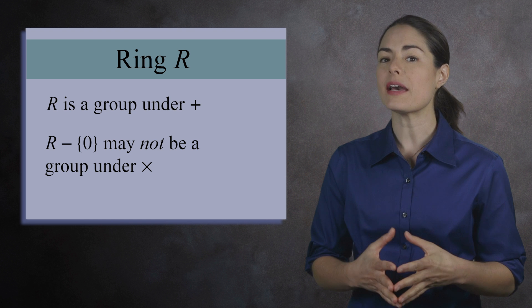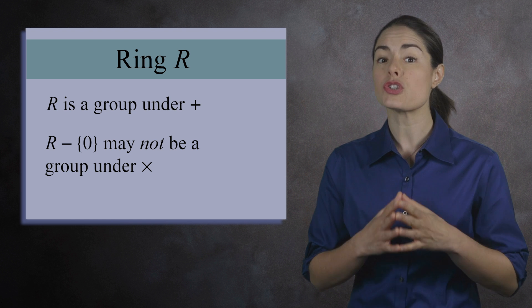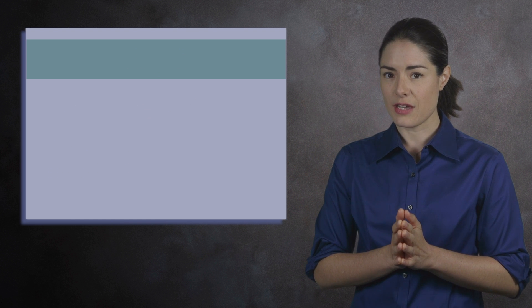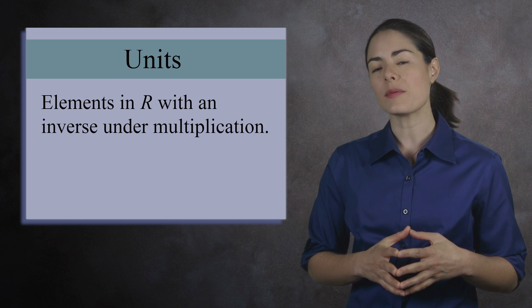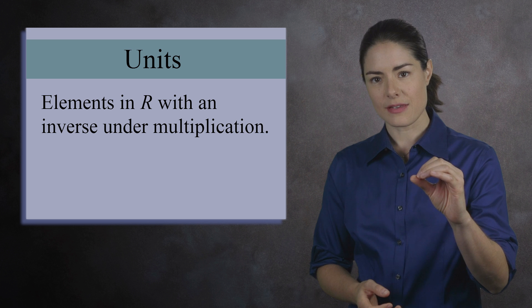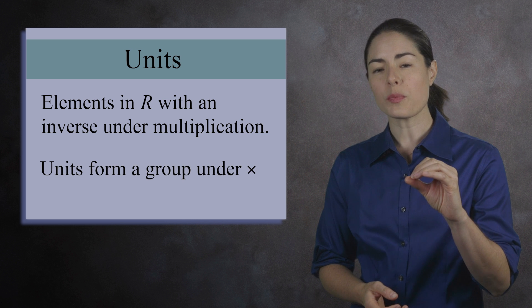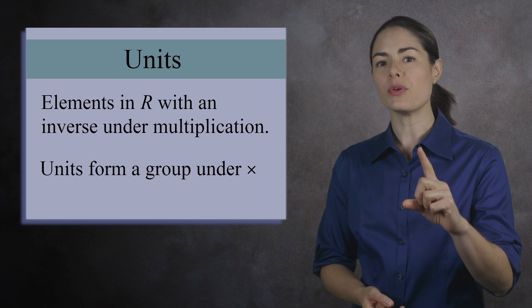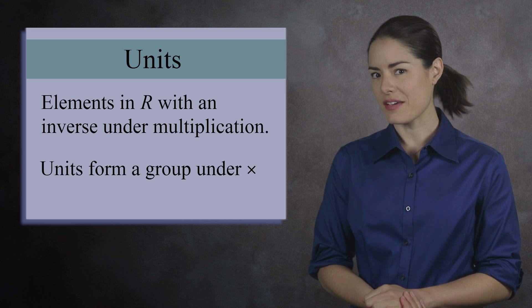However, there may be elements in the ring which do have multiplicative inverses. We call these elements units, and they form a group under multiplication — the group of units in a ring.